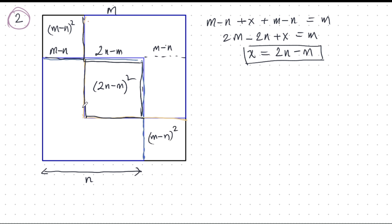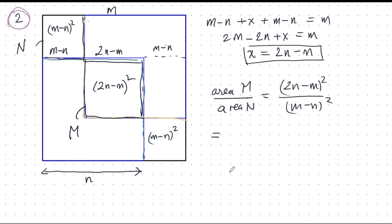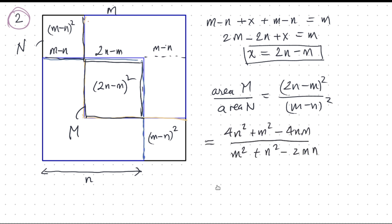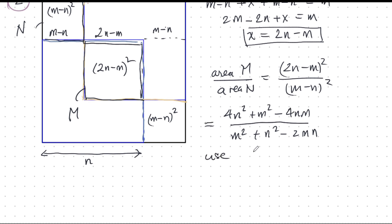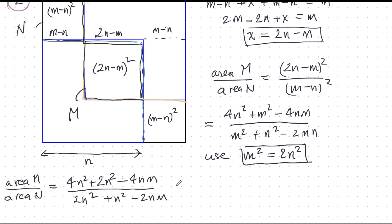I'm going to give them some names. Let's call this bigger square capital M and this smaller square capital N. What is the area of capital M over the area of capital N? We can expand all of that, and now we use what we know from before: m squared is 2n squared. So we use that original area relationship, that allows some magic to happen, and this fraction simplifies to simply 2.